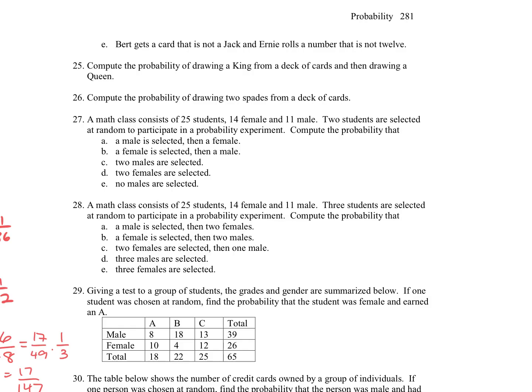All right, skipping over to question 25, we want to compute the probability of drawing a king from a deck of cards. So getting a king is 4 out of 52. Then drawing a queen, so if we have that king already, we know that there are 51 cards we'd have left, and there would still be 4 that are queens, because we chose a king, and next it was a queen. So that would become 16 out of 2652. And we could reduce it, 4 out of 663.